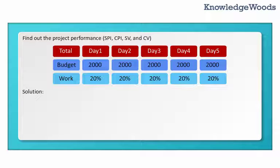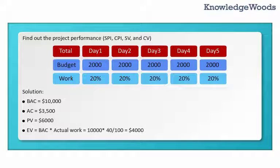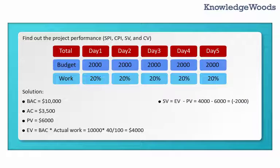Solution. Budget at Completion: BAC equals $10,000. Actual Cost: AC equals $3,500. Planned Value: PV equals $6,000. Earned Value: EV equals BAC times Actual Work equals $10,000 times 40 divided by 100 equals $4,000. Schedule Variance: SV equals EV minus PV equals $4,000 minus $6,000 equals minus $2,000.